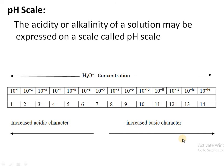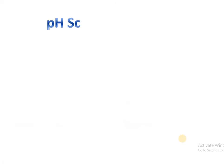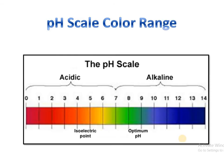The pH level above 7 and up to 14 represents basic character. The pH scale also has a color range. In the image, the range is 1 to 14, and 7 is neutral. When using an indicator, colors from red to orange represent acids, the green color represents neutral, and blue color represents the basic nature of the solution.